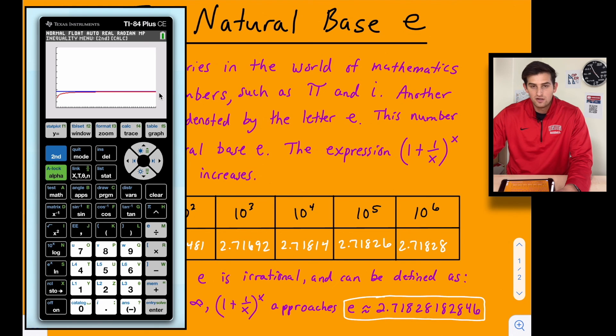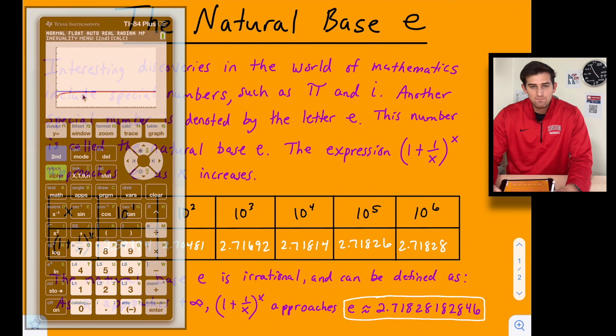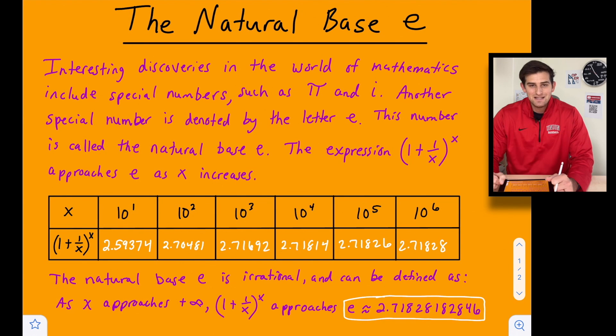notice how that is curving up towards Y equals e. And it looks like it's just right there across, going right there with it. It's not going to cross it. And so that's why we use that expression to say e is very similar to that, or that expression approaches e as we increase that expression towards positive infinity. So that's a little bit about the natural base e and also what the decimal approximation is that e is very close to.